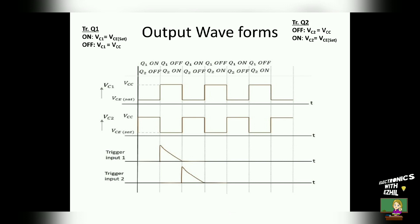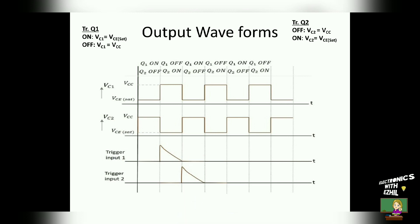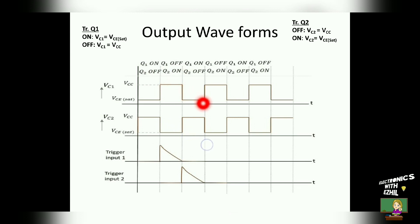Now we will see how to draw the output waveforms of the bistable multivibrator. The first graph refers to the output of transistor 1, which is VC1. The second waveform refers to the output of transistor 2, which is VC2. The third one is the reset trigger pulse and the fourth one is the set trigger pulse. The entire waveform is divided into six time slots. For the first time slot, Q1 is at on state and Q2 is at off state. For the second time slot, Q1 is at off state and Q2 is at on state. The third and fifth time slots are similar to the first, and the fourth and sixth time slots are similar to the second.